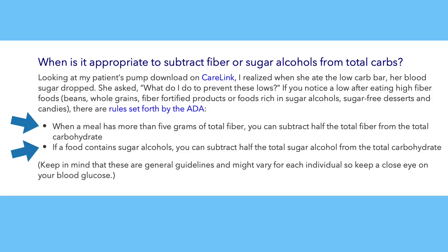So far we've seen the Atkins way of doing net carbs, and we found out that the American Diabetes Association does not recognize net carbs. But now I want to show you what Medtronics — one of the major producers of insulin pumps — says about net carbs. On the Medtronics website, when a meal has more than five grams of total fiber, you can subtract half the total fiber from the total carbs. And if a food contains sugar alcohols, you can subtract half the total sugar alcohol from the total carbohydrate. That stipulation about more than five grams is probably because with less fiber, subtracting half won't give a significant number. But that's too many rules for me to memorize, so I'm going to subtract half the fiber regardless.